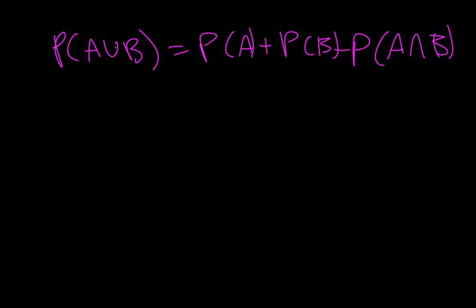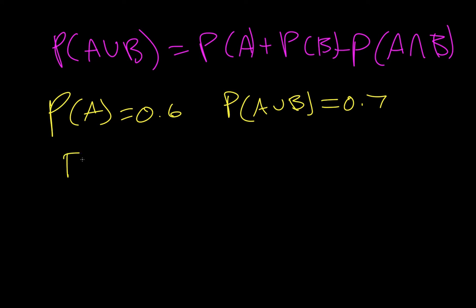So let's start with example number 12. And we're given probability of A is equal to 0.6, probability of A union B is 0.7, and the intersection is 0.3. And then we need to find probability of B.